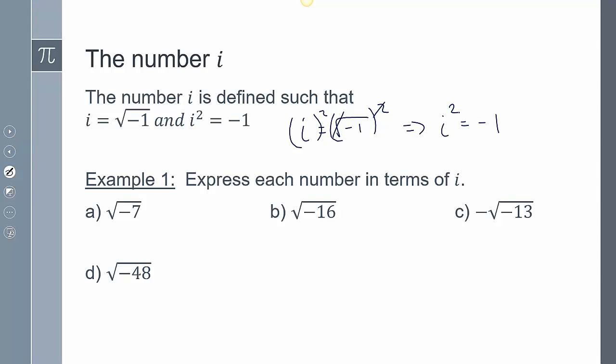Here are a few examples of how to rewrite radicals that have a negative inside the square root in terms of i. The square root of negative 7 can be broken into the square root of negative 1 times the square root of 7, which gives us i root 7. For the square root of negative 16, the square root of negative 1 is i, and the square root of 16 is 4, so that's 4i.